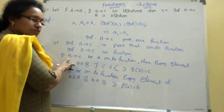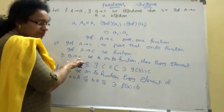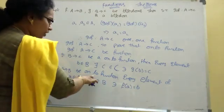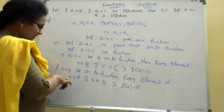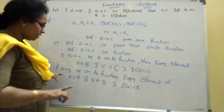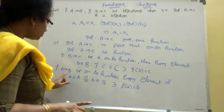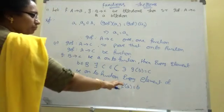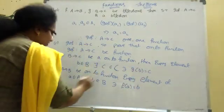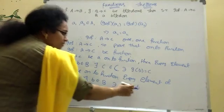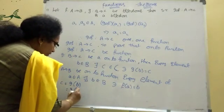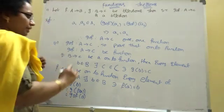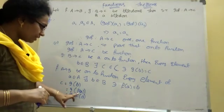G from B tends to C is onto function — every element of capital B, there exists small C belonging to capital C such that G of B equals C. Similarly, F from A tends to B is onto function — every element of small A belongs to A, there exists B such that F of A equals B. Now C equals G of F of A.